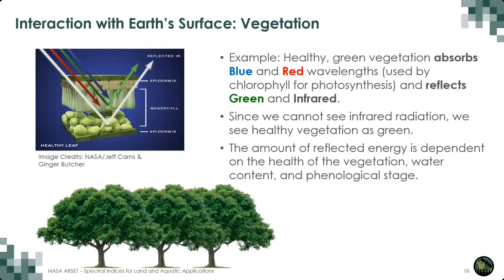Here is a simplified example of what happens with electromagnetic energy for green vegetation. Incoming radiation in the visible — blue, green, and red — and the near-infrared wavelengths are shown. Blue and red wavelengths are absorbed by green vegetation, while green and near-infrared wavelengths are reflected, primarily because of the chlorophyll in the leaves. We see vegetation as green because we only see reflected energy in the visible wavelengths — we can see green, but we cannot see the infrared.